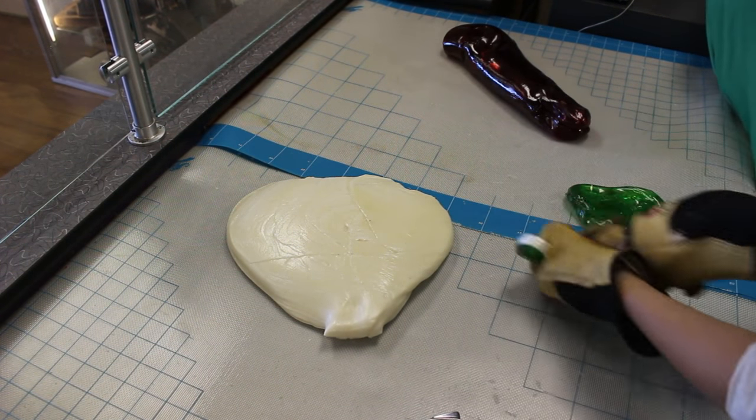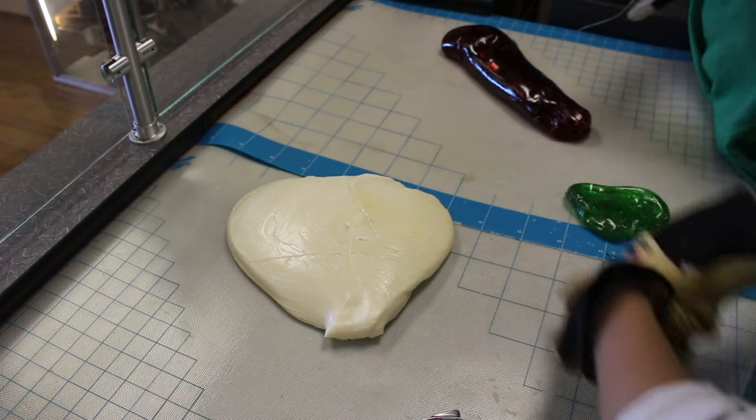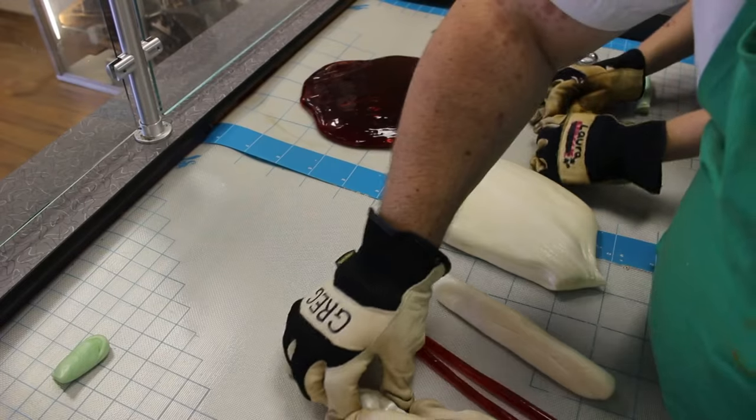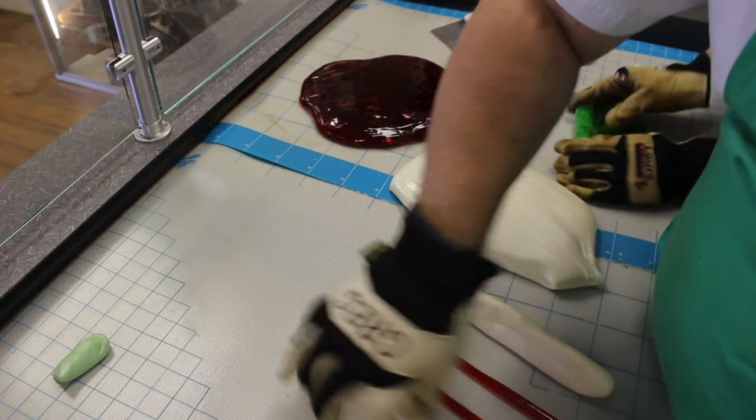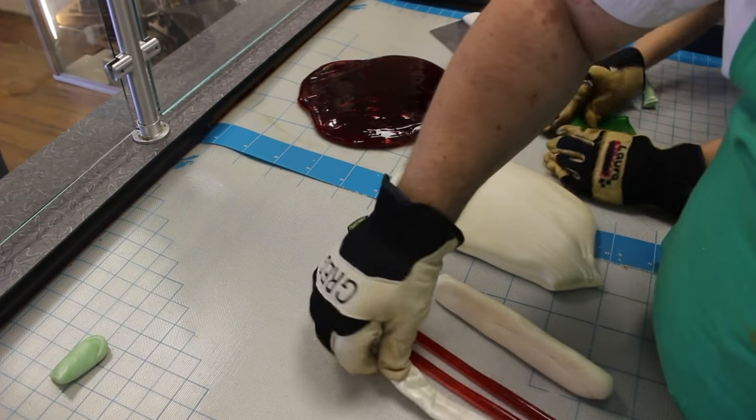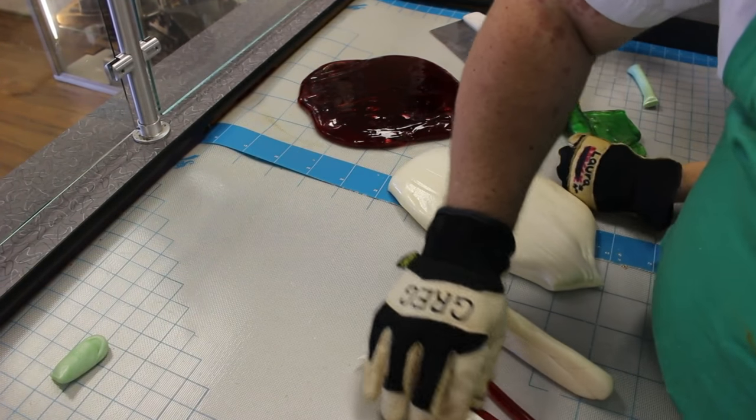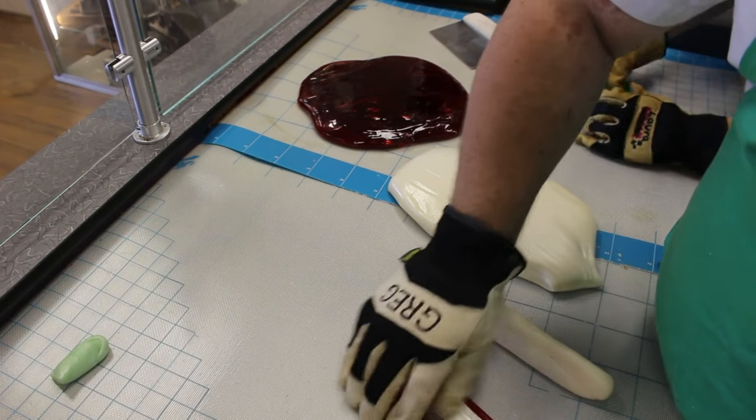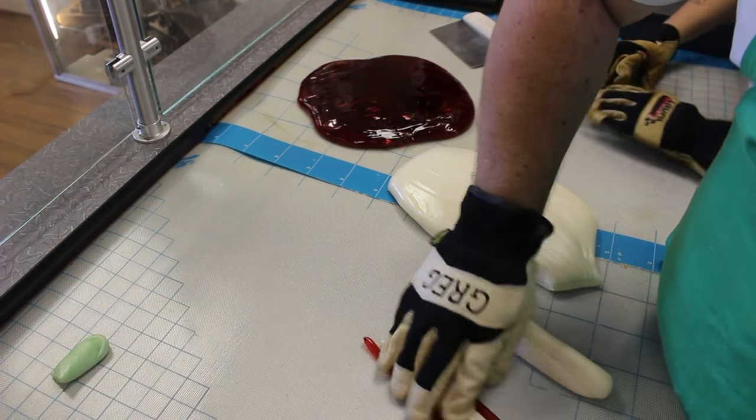While Laura makes the leaf, Greg readies the cherries themselves and puts a spacer in between to make sure they don't get squished together. You can see the cold triangle of white on the table next to where he works, and he'll wrap that with a red wrap, and then put it on top of the cherries in the spacer.